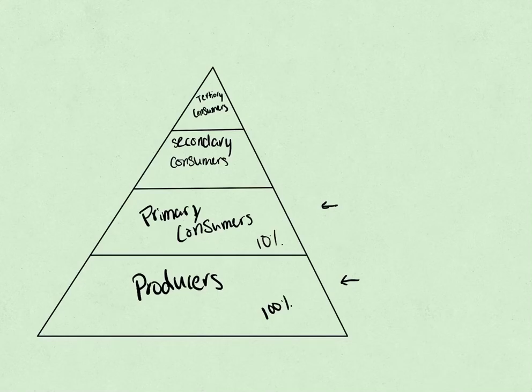The secondary consumer, since they prey on the primary consumers, they only get 1% of the energy, because 10% of 10% is 1%. And lastly, the tertiary consumers get 0.1% of the energy. So as you progress to the top, there is less energy being transferred, and therefore, you need to be able to eat more in order to consume the same amount of energy.